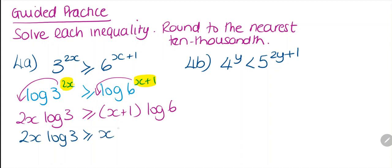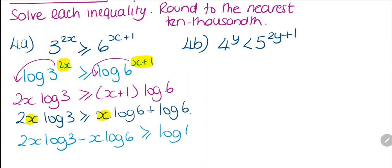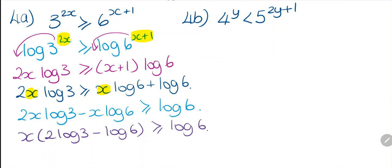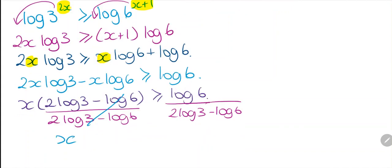So we have x log 6 plus log 6. We have an x here and an x here, so we put them on one side: 2x log 3 minus x log 6 is greater than or equal to log 6. Factor by x: x(2 log 3 minus log 6) is greater than or equal to log 6. Now divide both sides by (2 log 3 minus log 6).